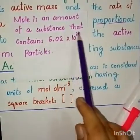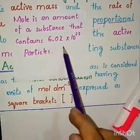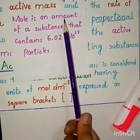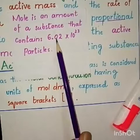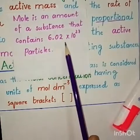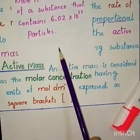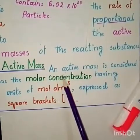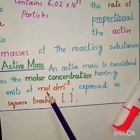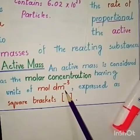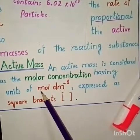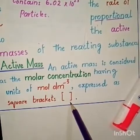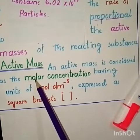Moles are the amount of a substance that contains 6.02 × 10²³ particles — we call that 1 mole. The unit of molar concentration is moles per decimetre cubed (mol/dm³). We express the active mass or molar concentration using square brackets, and this definition is also important for short questions.